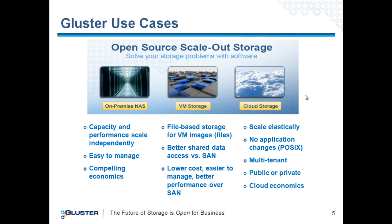Ultimately, people are moving towards a cloud environment, where IT services are delivered as a utility over the network. You can't predict what's going to happen — growth happens very quickly without much warning, so you need to be able to scale elastically. We've built a lot of capabilities into our Elastic Volume Manager. Applications need to be accessed over the network and don't need to be changed to take advantage of the underlying infrastructure. Gluster is POSIX compliant, multi-tenant, and works the same whether in a public or private cloud.